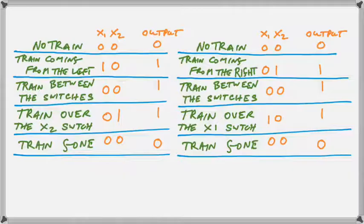Well, when X1 and X2 are 0, 0 we want the output to be either a 0 or a 1. If the train is gone or there is no train we want the output to be a 0. But when the train is between the switches we desperately have to have the output a 1.